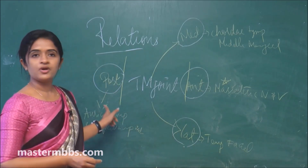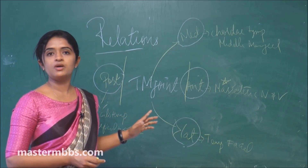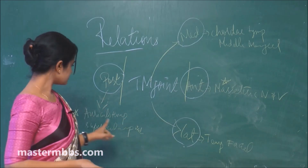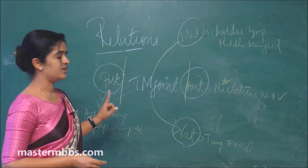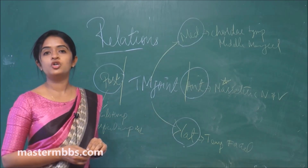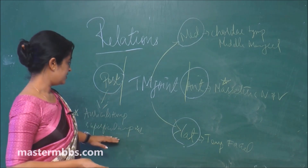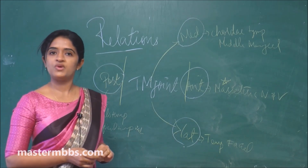What about the posterior relation? For the posterior relation, again think about a nerve and a vessel. The nerve here is the auriculotemporal nerve, and the vessel here is the superficial temporal vessels.